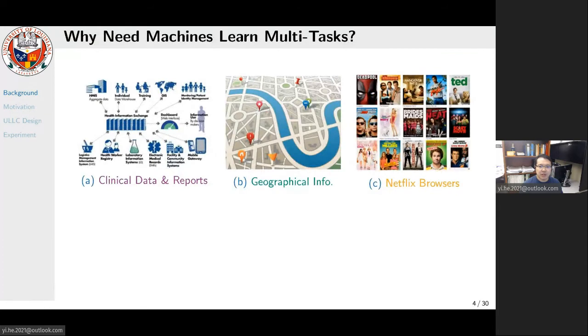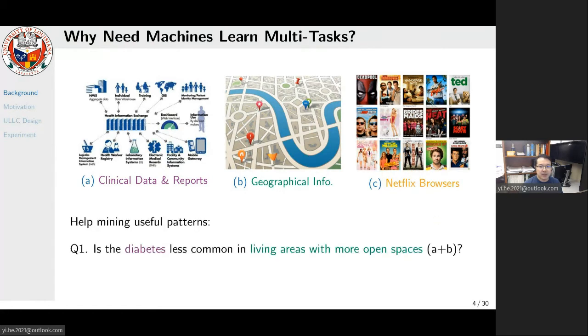In the context of machine learning, dealing with multiple disparate tasks conveys immediate benefits in that it allows us to uncover interesting patterns. For example, when diagnosing a patient, suppose we have their clinical data from various medical service providers, their geographical information, and their cyber world behaviors such as social media and browser histories. Then we can ask machines interesting questions such as: is depression less common in living areas with more open spaces, or is Alzheimer less suffered by those in open communities? Such questions will remain hidden if we do not handle multiple learning tasks simultaneously.